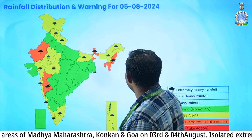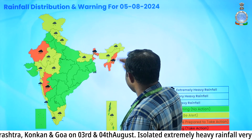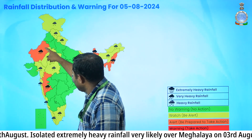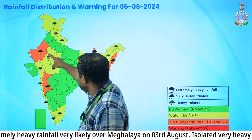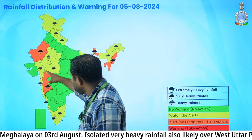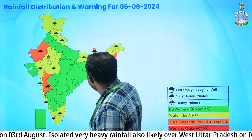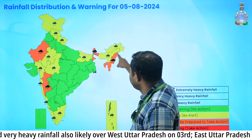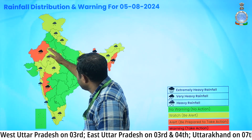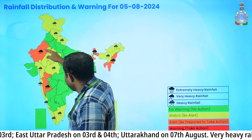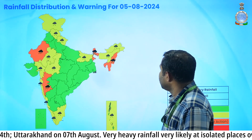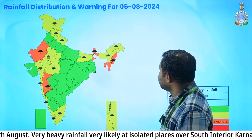Coming to warnings issued for 5th August: very heavy rainfall is expected over west Rajasthan, Madhya Maharashtra, Sub-Himalayan West Bengal, and Andaman & Nicobar Islands. The regions highlighted in yellow are expected to receive heavy rainfall on 5th August.